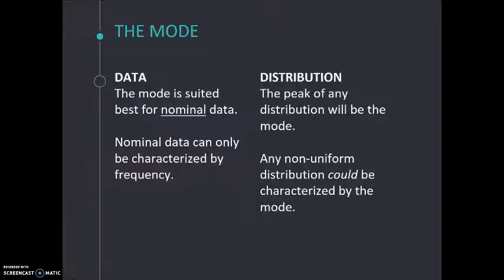So any non-uniform distribution can be characterized by the mode. Now, a uniform distribution is a distribution that has no mode. It will look like a perfect rectangle in a histogram because every single value occurs equally often. When this occurs, the mode is not appropriate.